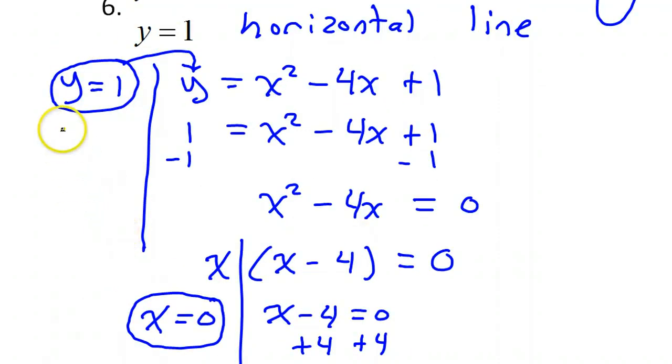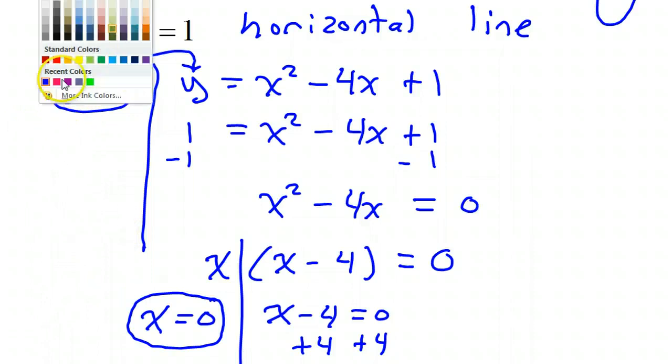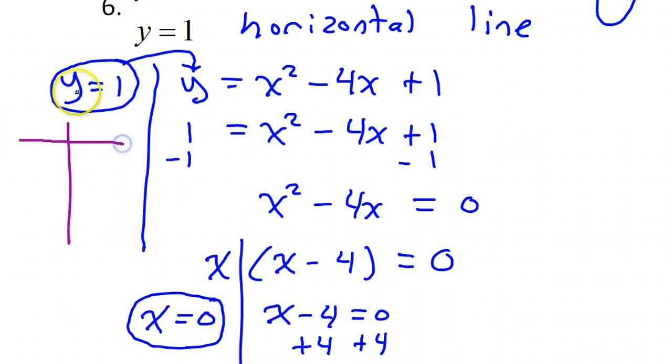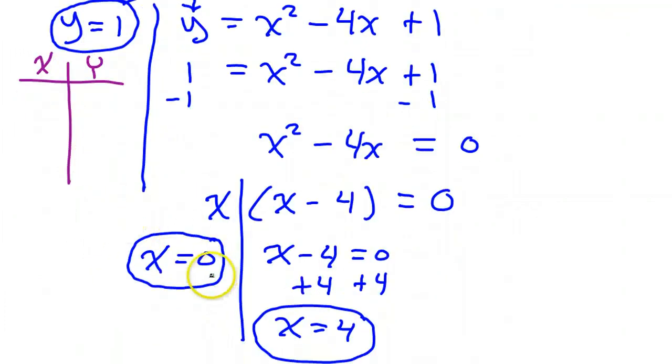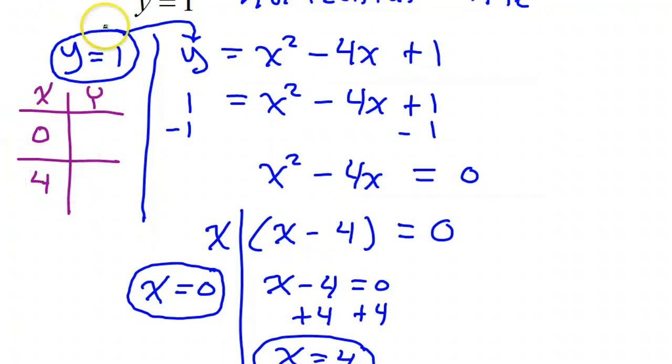Now, what about the y values? Let's go ahead and set up our t-chart over here with this equation reminding us about the y values. So we have our x values are 0 and 4. Now, normally, we would plug these x values back into the equation for y. But here, there is no x value to plug into. The equation just says y equals 1. So where in the world am I going to get my y values? Such a mystery. Until I realize that the equation right here is telling me the answer. y equals 1. So that means y will equal 1 in any case.